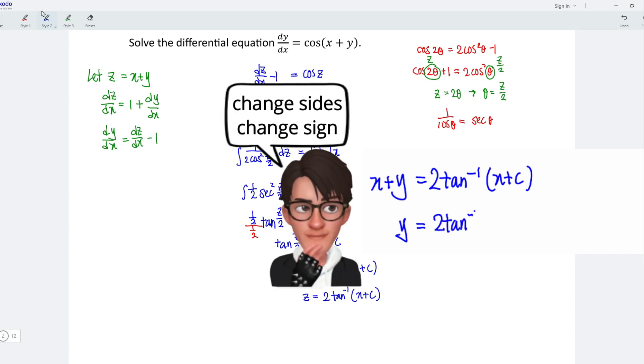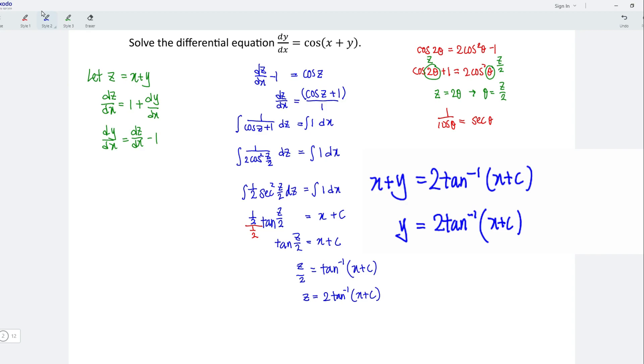And this is equal to 2 arctan x plus c. Move x to the right. Remember, when we change the side, we should change the sign. In other words, plus becomes minus.